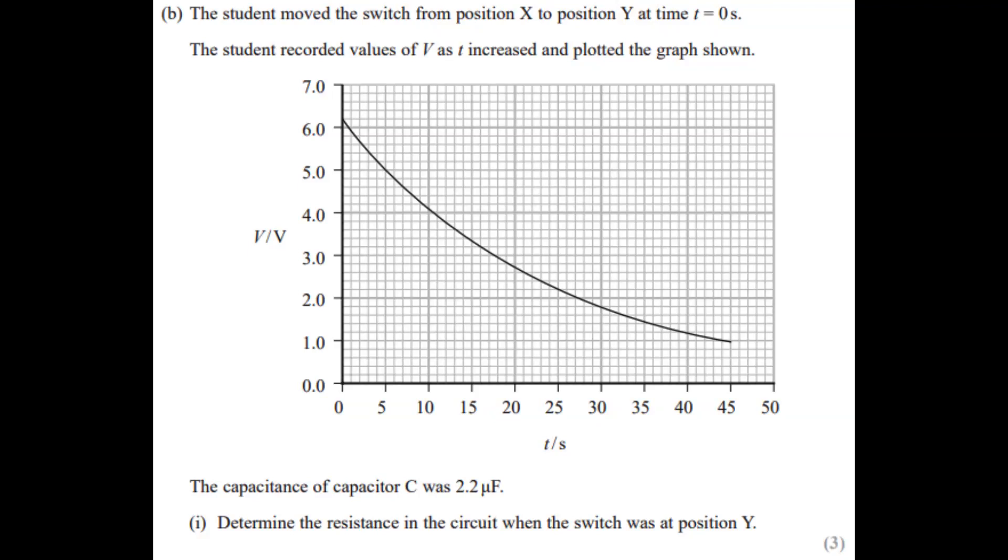Okay, so we have a question here. The student moved the switch from position X to position Y at time t equals 0 seconds. The student recorded values of V as t increased and plotted the graph shown. The capacitance of capacitor C was 2.2 times 10 to the power minus 6.